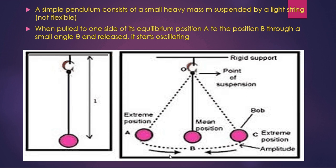As in the diagram, a body of mass M is attached to a string; one end of the string is fixed, the other end is attached to mass M. The length of the string is L, and including the radius of the mass gives the length of the pendulum. Point O is the point of suspension. Point A is one extreme position, point C is the other extreme position, and point B is the mean position. The distance from A to B or from B to C is called amplitude — the maximum distance from mean to extreme position.